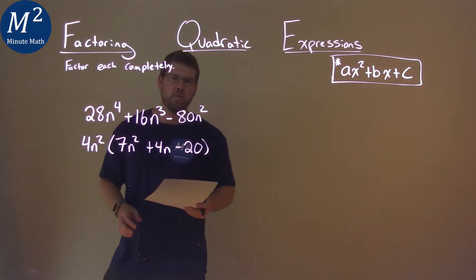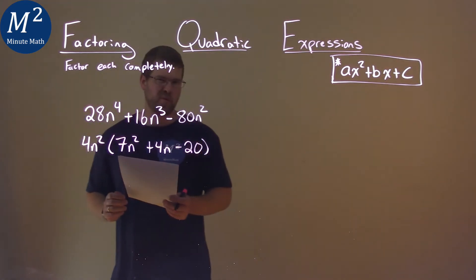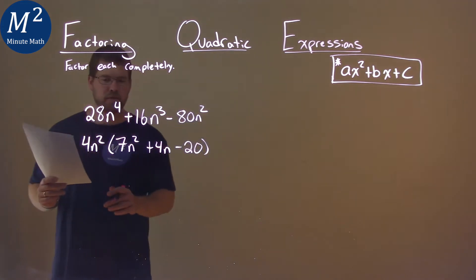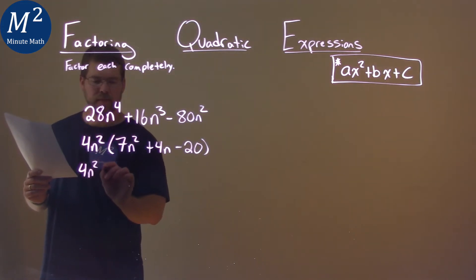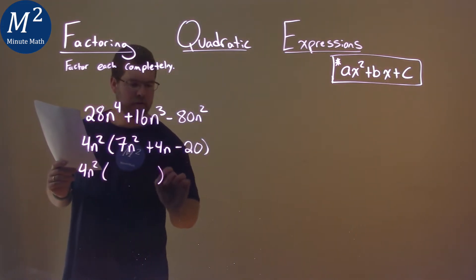Alright, so for right now, I'm going to ignore this 4n squared and deal with the other parts. So let's go rewrite this down here, and we know it has to be in some factored form.